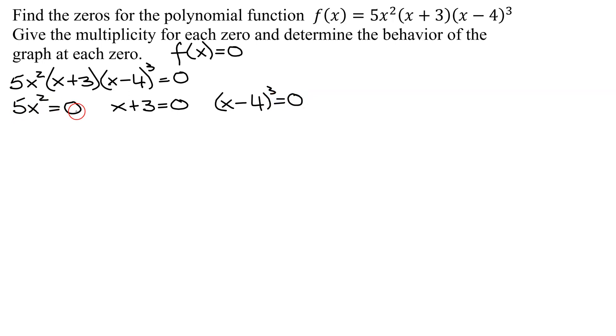5 cannot equal zero, so I get x squared equals zero. If x squared equals zero, then x equals zero. Next one, x plus 3 equals zero. Subtract 3 from both sides, I get x equals negative 3.